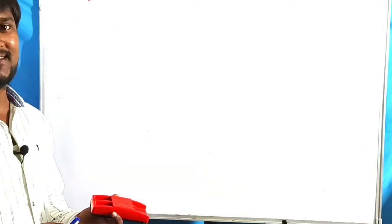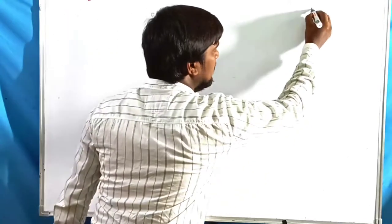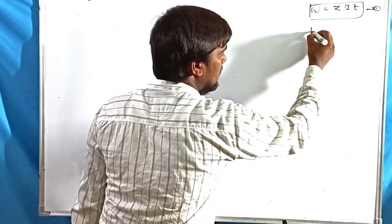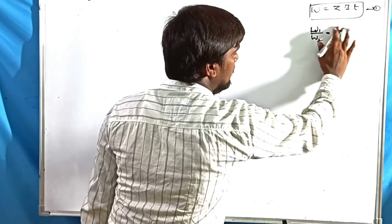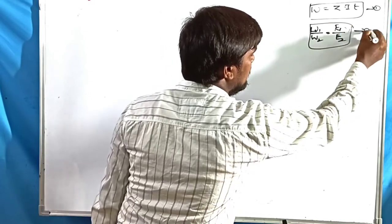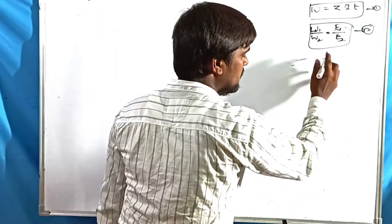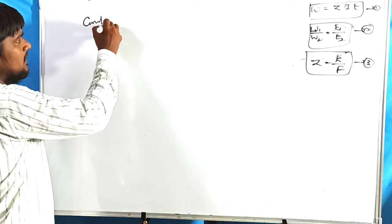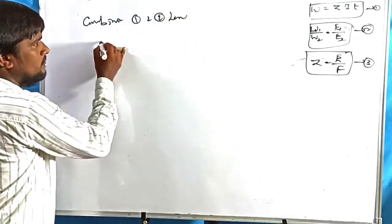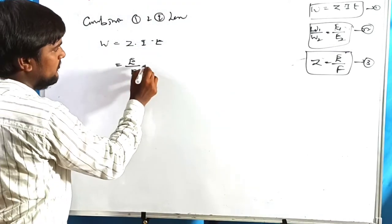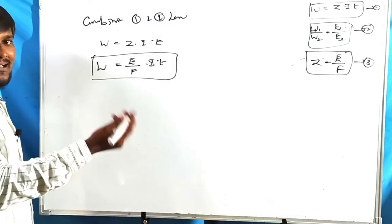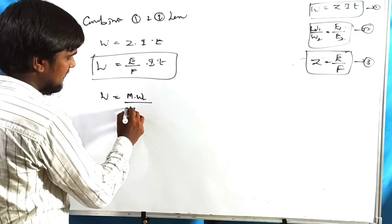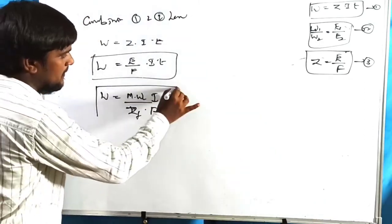To summarize both laws: W = Z × I × T is the First Law equation. W₁ / W₂ = E₁ / E₂ is the Second Law equation. Z = E / F is the third important equation. Combining the first and second laws: W = (E / F) × I × T, or W = (molecular weight / Z-factor × F) × I × T. These are the golden formulas for solving numerical problems in JEE and NEET examinations.